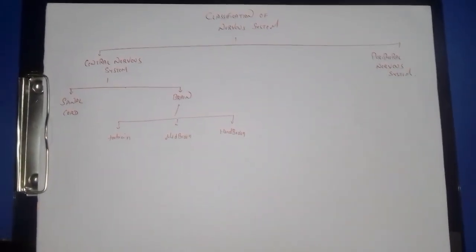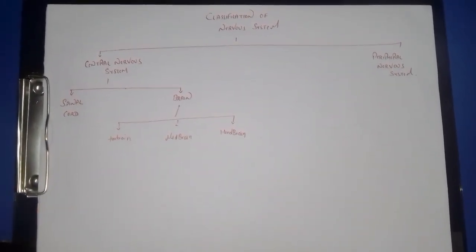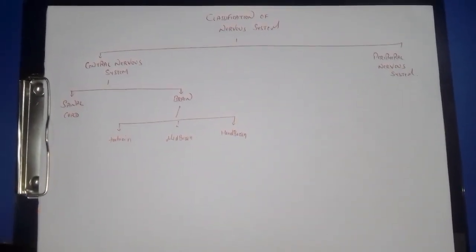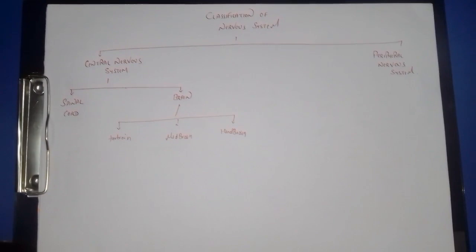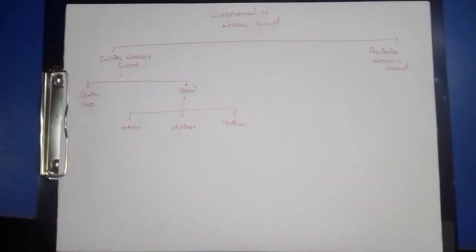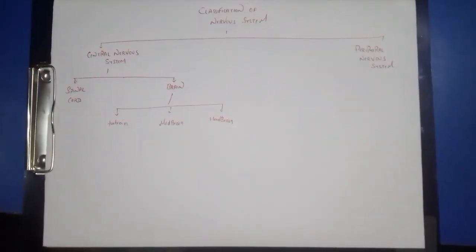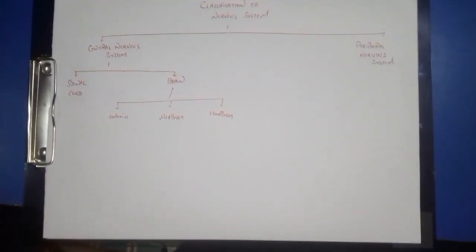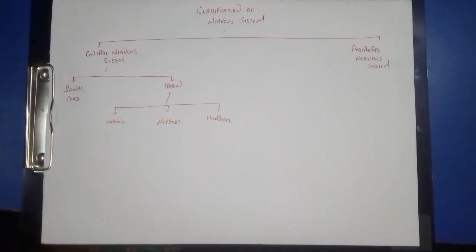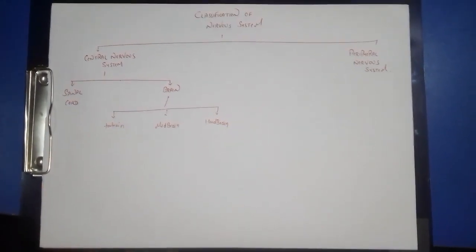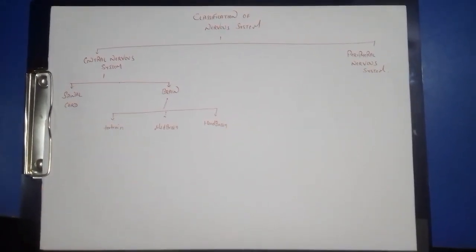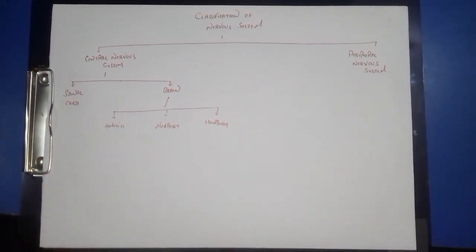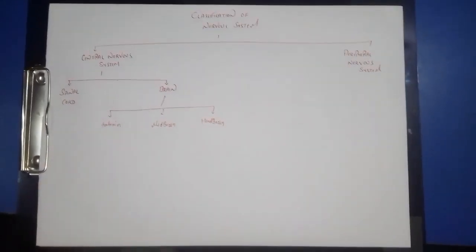Hello guys, in this video we will be discussing about the classification of the nervous system — how the nervous system is divided into two parts: the central nervous system and the peripheral nervous system. Further talking about the central nervous system, it is divided into two parts: the spinal cord and the brain.